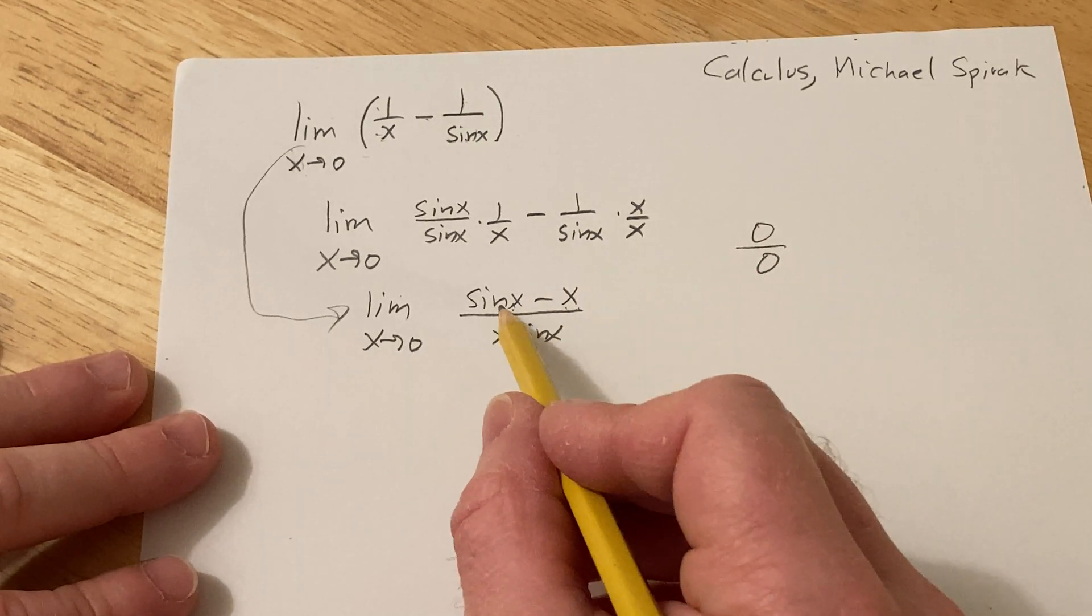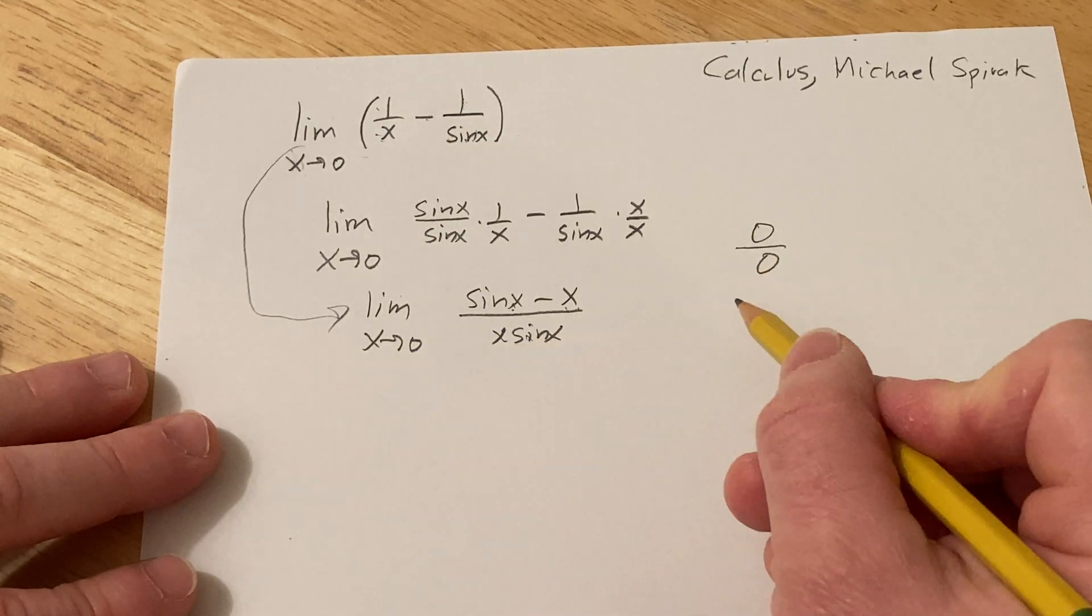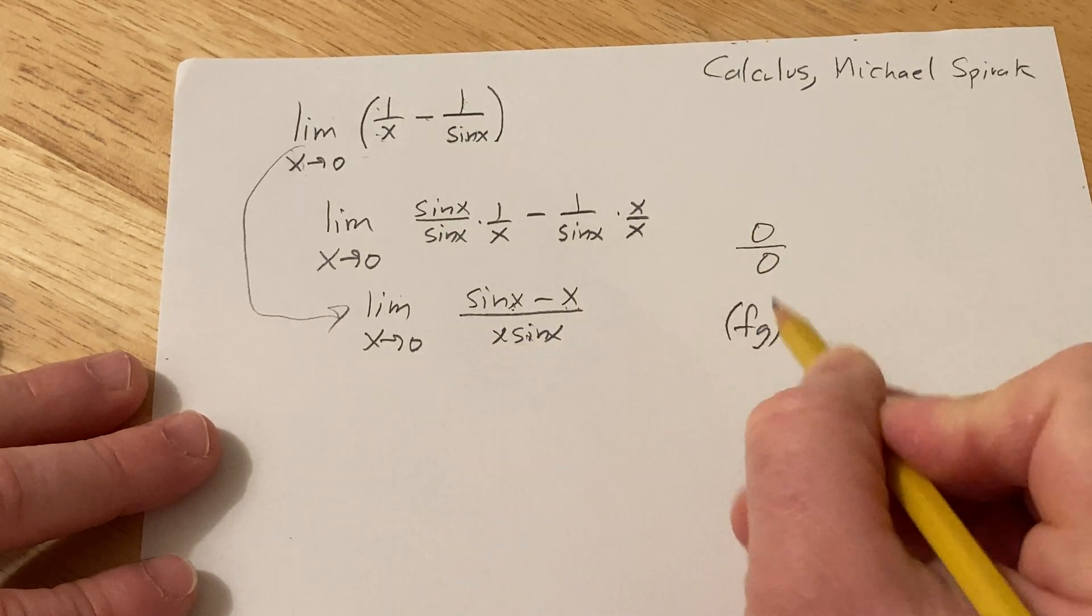L'Hopital's rule basically says that you take the derivative of this and you take the derivative of the bottom here. The bottom is a product, so we're going to have to use the product rule.